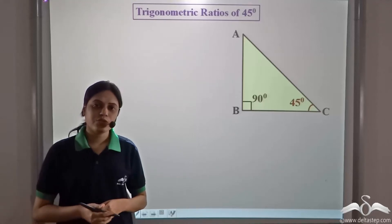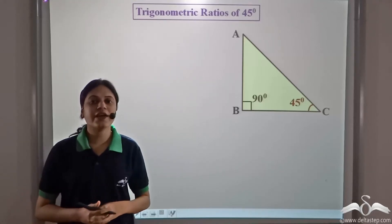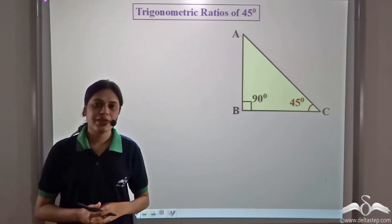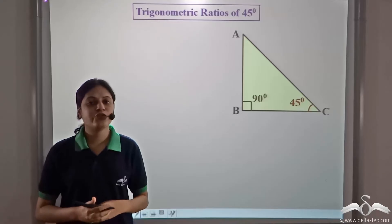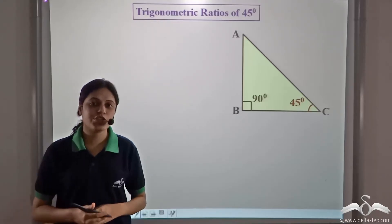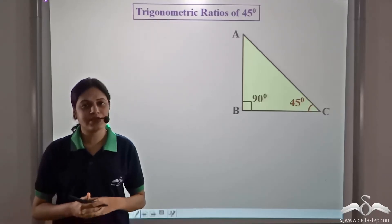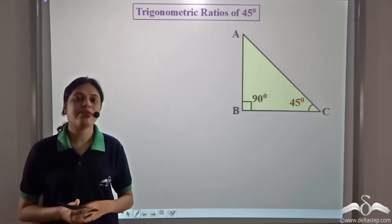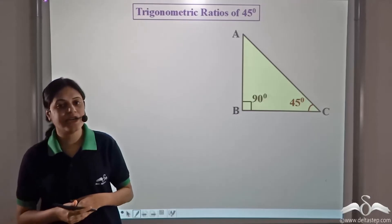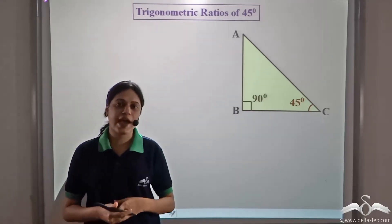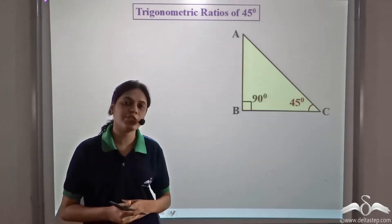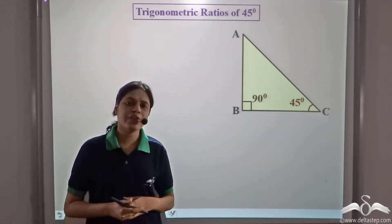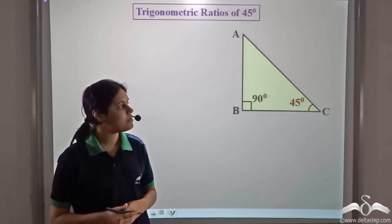We know that as long as the angle remains the same, the value of trigonometric ratios remain the same. That is the value of sine, cosine, and tan for that particular angle always remain constant.